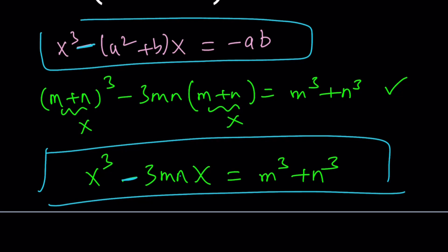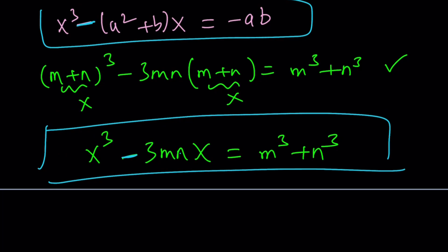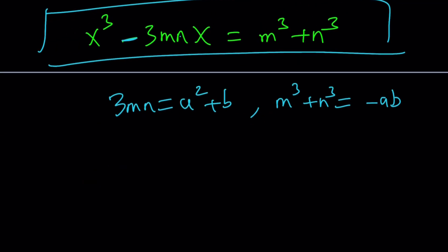So if you ignore the negatives, we're going to get the following: 3MN will be the same as a²+b. And M³+N³ would be the same as negative ab. Awesome. From here, we can solve for MN. MN equals (a²+b)/3.